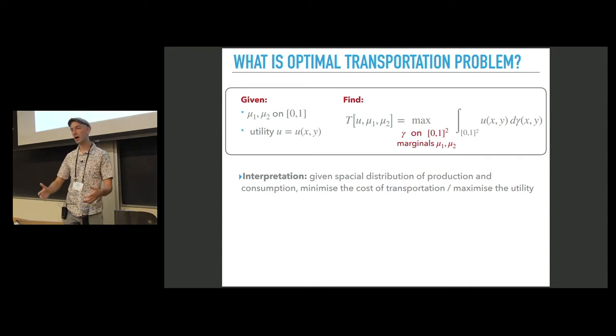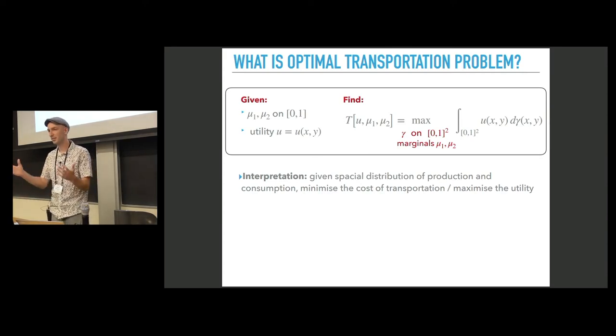The standard interpretation is as follows. Mu 1 and mu 2 are spatial distributions of production and consumption of a certain commodity. These two distributions can be different. So the produced commodity must be transported to satisfy the demand. The transportation problem is finding the transportation plan gamma, this distribution on the unit square, that minimizes the cost of transportation. In our case, we are interested in maximizing the utility.